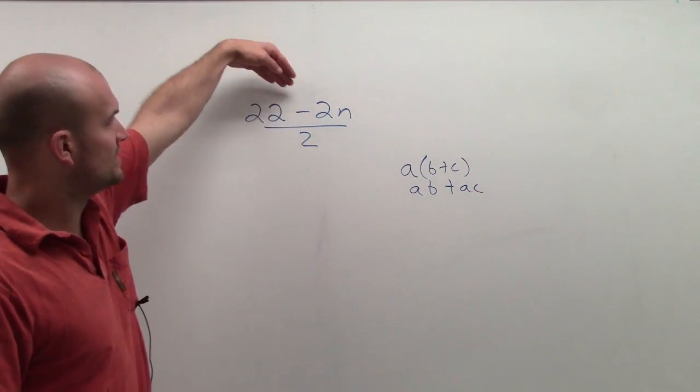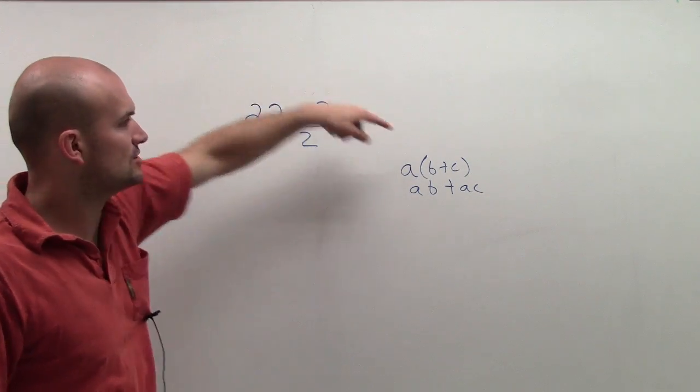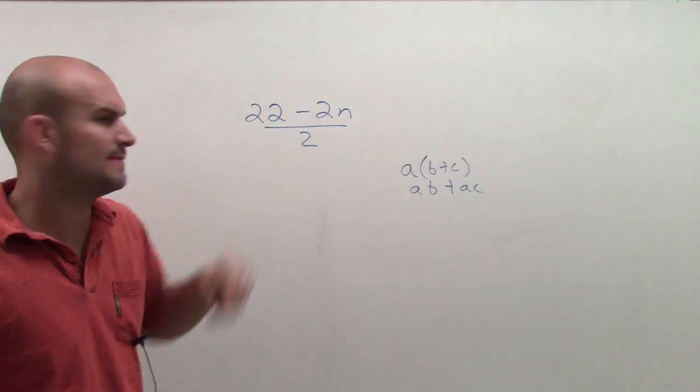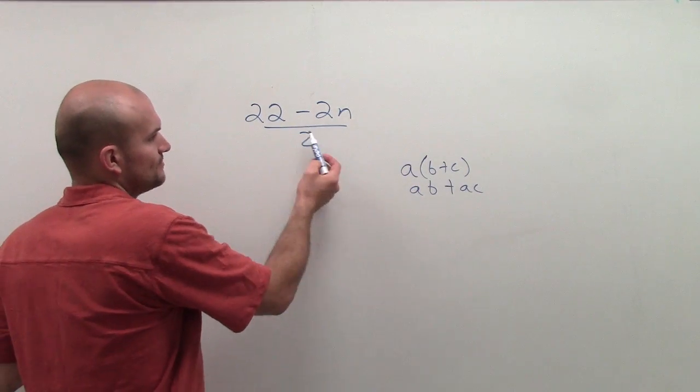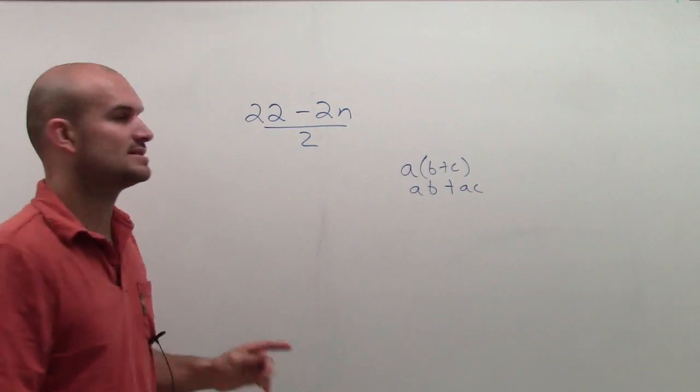So what I'm going to want to do is I'm going to want to say, can I rewrite this so it looks like in the form of a distributive property? Well, you could say, here there's no parentheses, right?